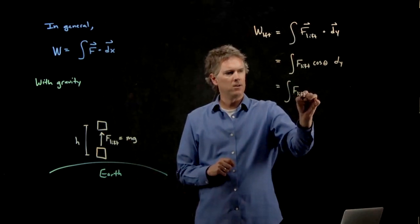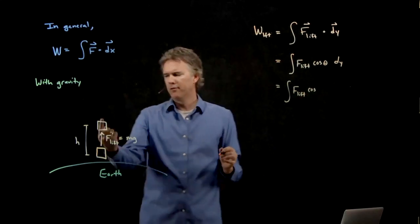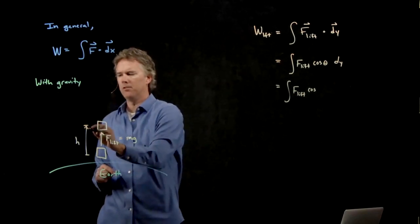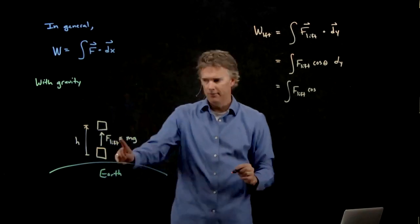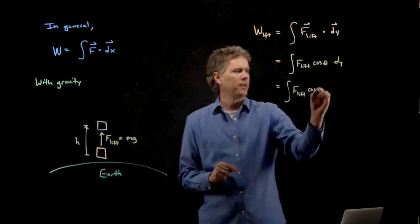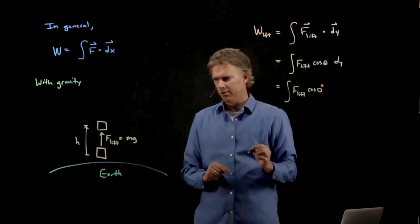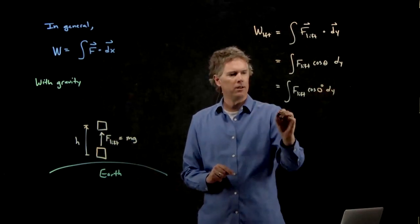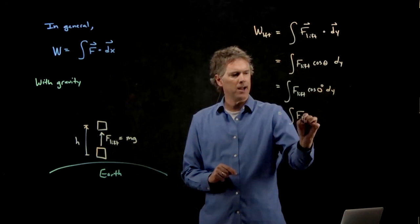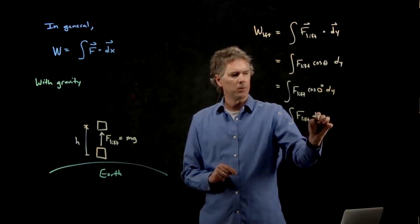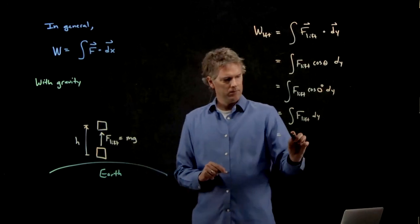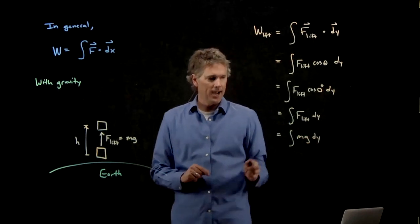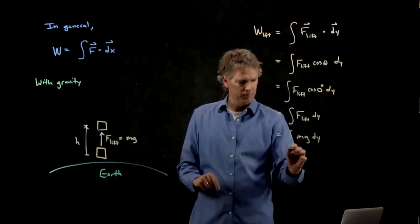What's the angle between my lifting force and the displacement? Well, the displacement is up. The lifting force is also up. And so the angle between those two is zero degrees. Cosine of zero is one. And so we're just left with integral F_lift dy. And now we know exactly what that is. F_lift is mg. We still have our dy, and we're going to lift it from zero to h.